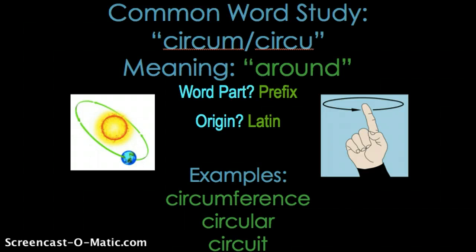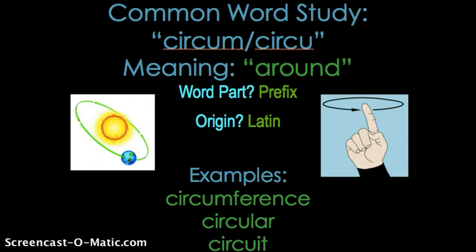Electricity kind of goes out in a path through the wires, travels to the appliances that need the energy. Some of it gets used when the appliances are on, and then it travels back to its source. That's why it's called a circuit.